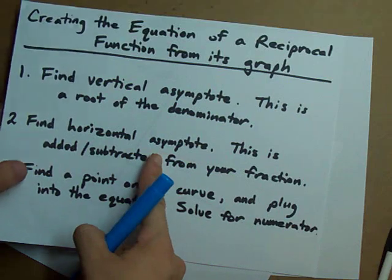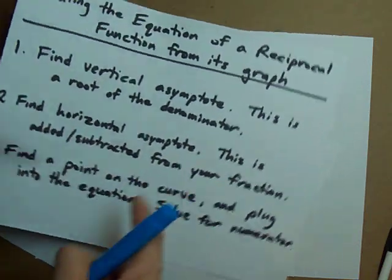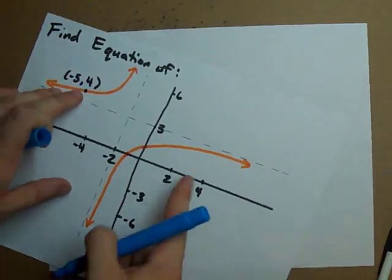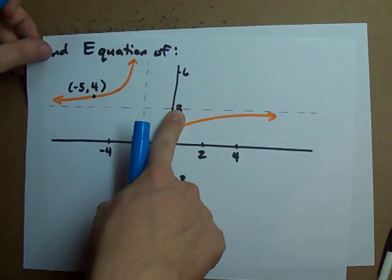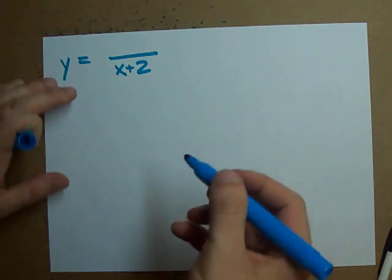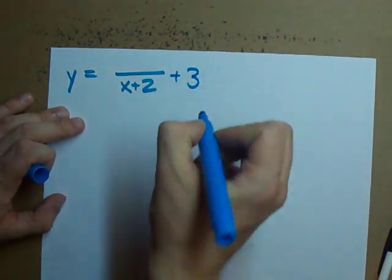Find your horizontal asymptote and that's added or subtracted from your fraction. I made that pretty clear here too. This horizontal asymptote is at y equals positive three. So you got a plus three at the end.